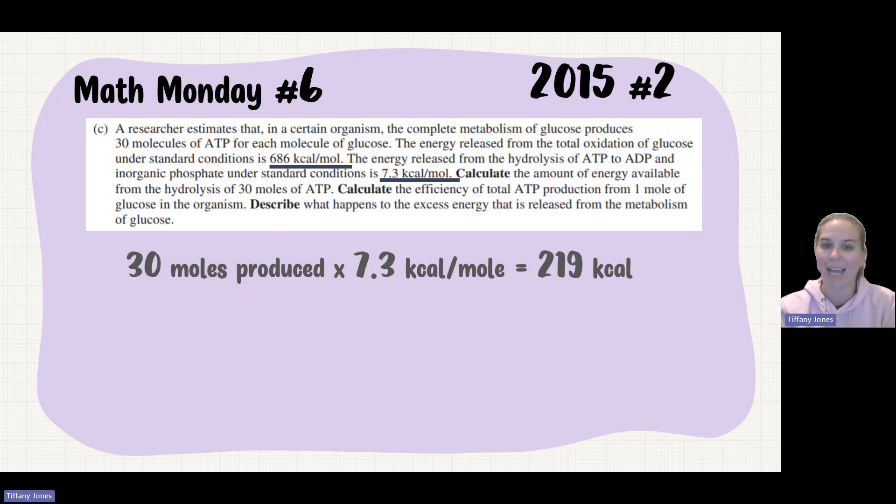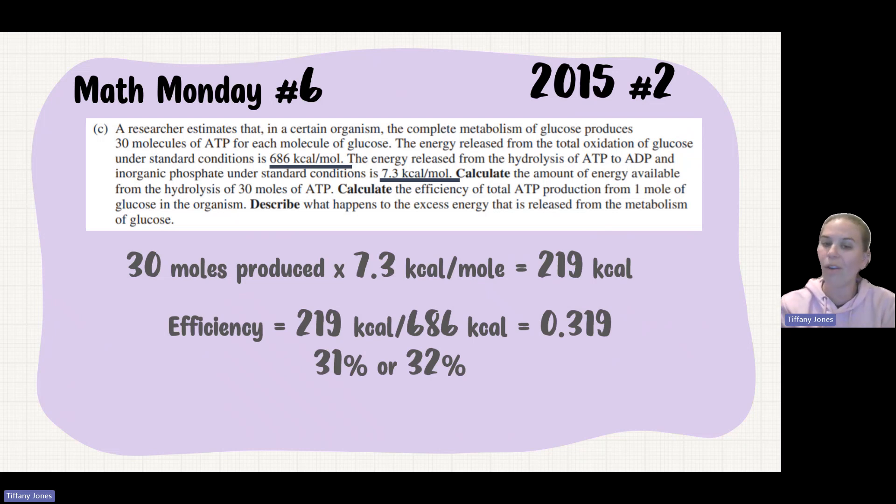Now we want to figure out the efficiency. Calculate the efficiency of total ATP production from one mole of glucose in the organism. So under standard conditions, it's 686 kilocalories, but we found the math to be 219 kilocalories. So that's going to be our efficiency: 219 divided by 686. That's going to give us 0.319 or 31 to 32 percent, one of those two numbers.